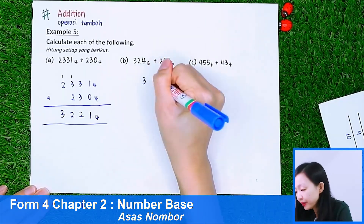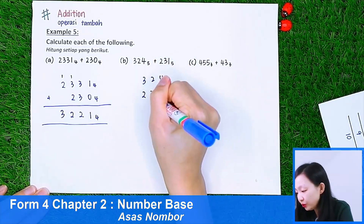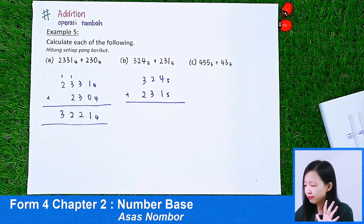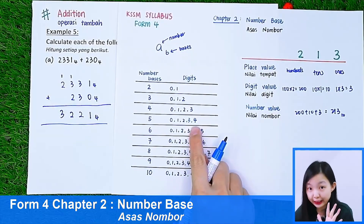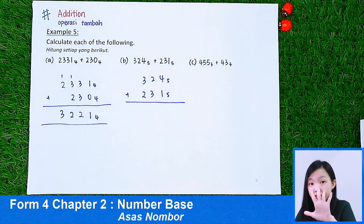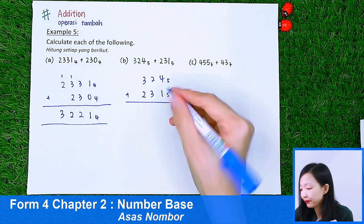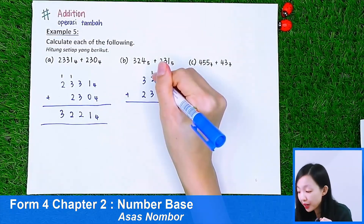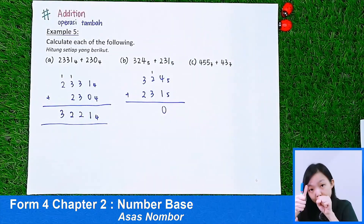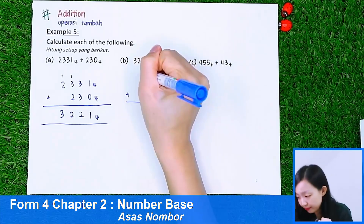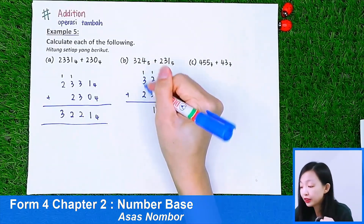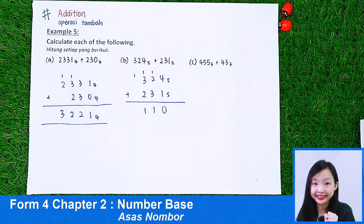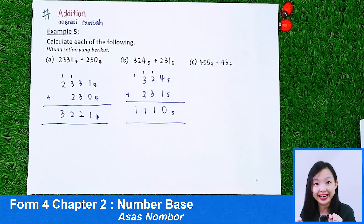One more example: 3, 2, 4 in base 5 plus 2, 3, 1 in base 5. 4 plus 1 is 5 — we cannot write 5 because the highest digit is 4. So we subtract 5, leaving 0, and carry 1. 1 plus 2 plus 3 is 6 — subtract 5, leaving 1, carry 1. 3 plus 2 plus 1 is 6 — again subtract 5, leaving 1, carry 1. This will be our final answer.